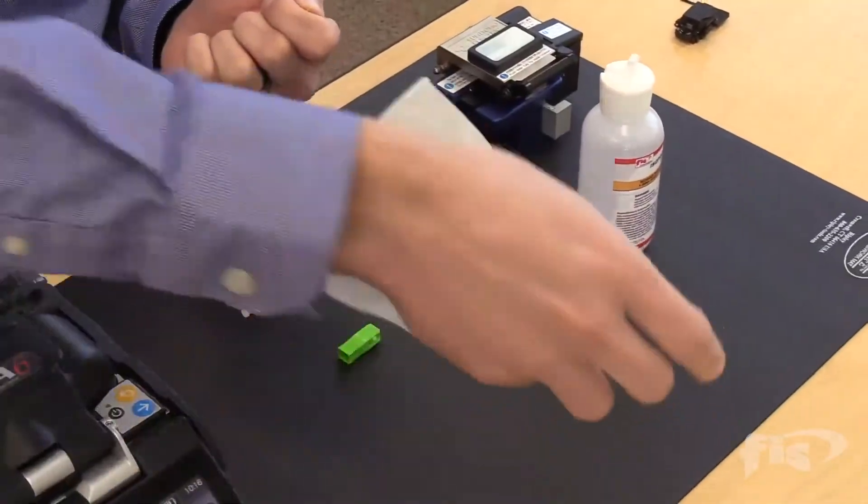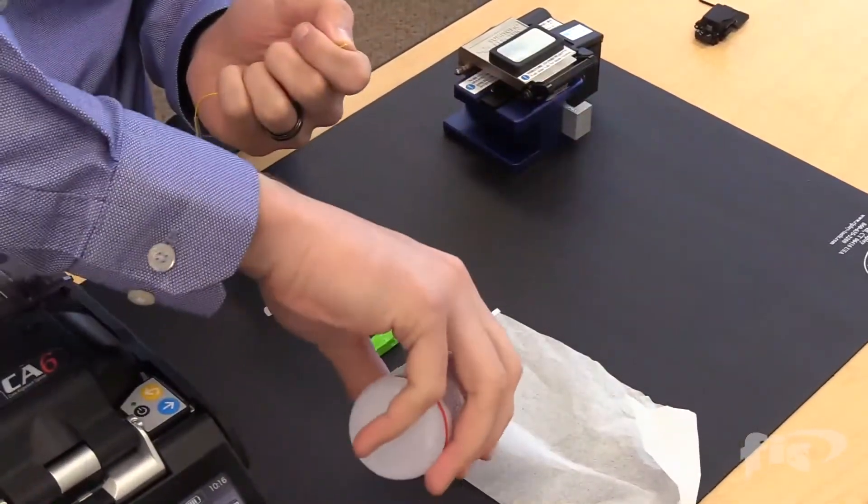To clean the fiber, use 99% isopropyl alcohol and a low-lint wipe.